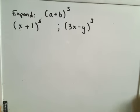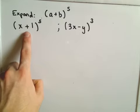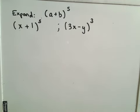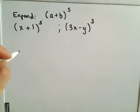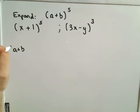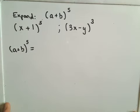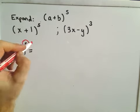I'm going to expand three things here. First, (a + b) to the fifth; then I'll relabel that a little to turn it into (x + 1) to the fifth; and then I'll do (3x − y) to the third. You may want to jot down the formula or have it from your book. For (a + b) to the fifth, our n value is going to be 5.